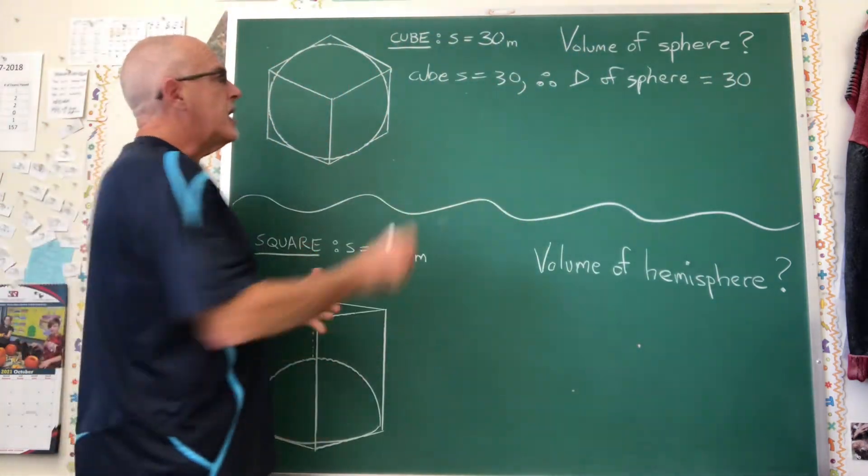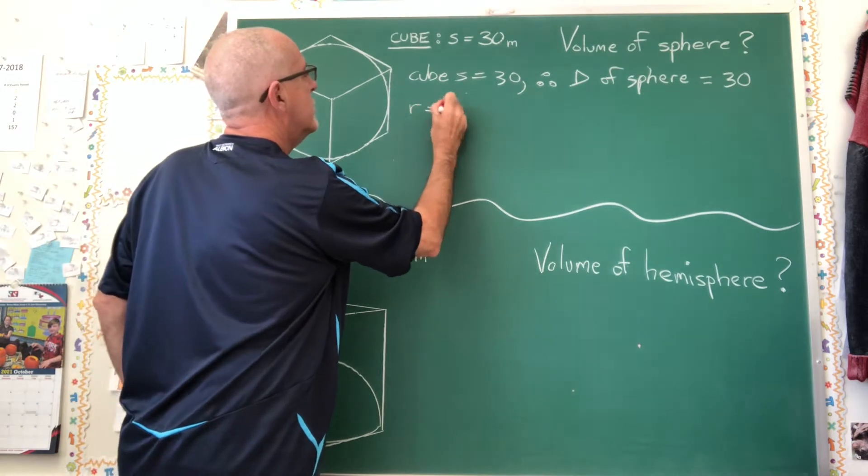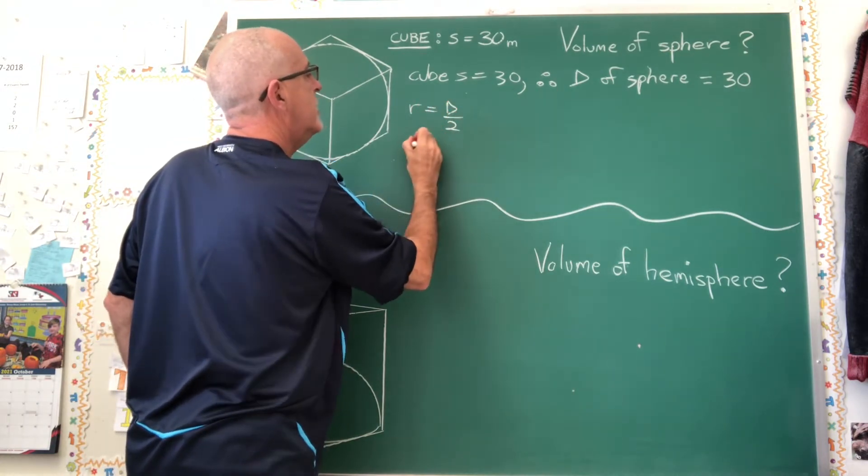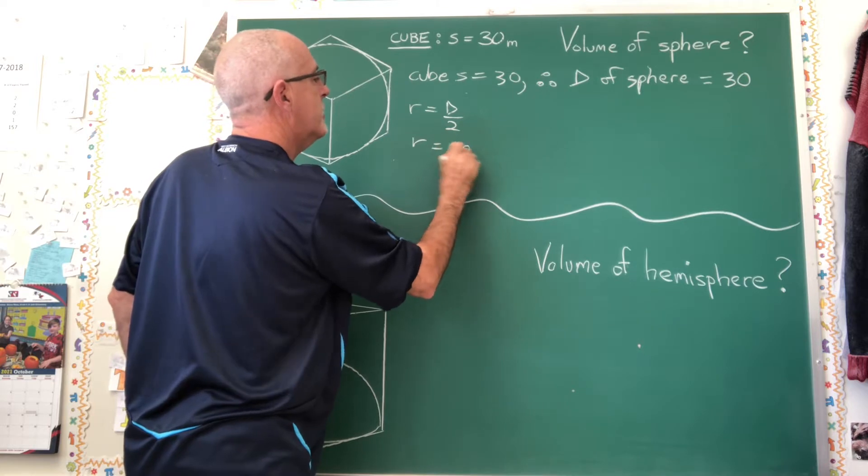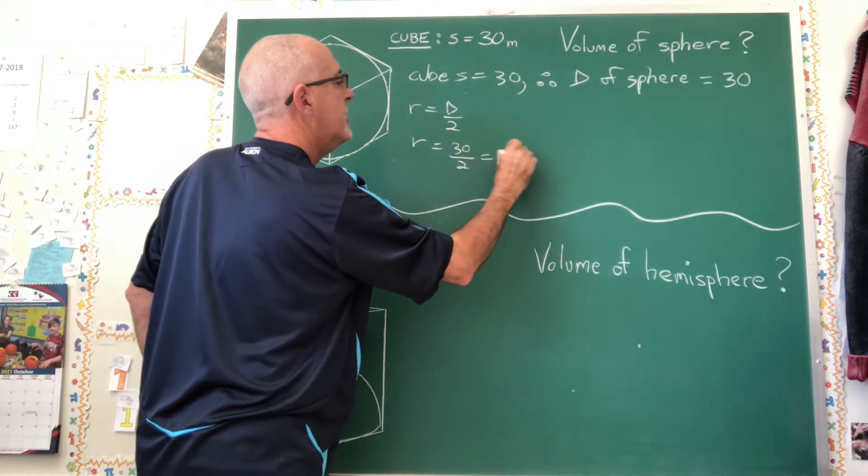And now I need the radius, not the diameter, so radius equals diameter over 2. So the radius of the sphere is 30 over 2, which is 15 meters.